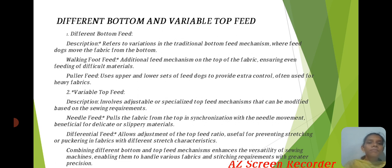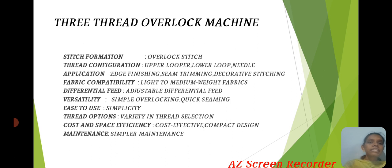3-Thread Overlock Machine: Stitch formation involves thread interlocking between the upper looper, lower looper, and needle. Applications include edge finishing, seam trimming, and decorative stitching. The machine is suitable for light to medium weight fabrics. It features adjustable differential feed, is simple and easy to use, and is cost-efficient in design and maintenance.